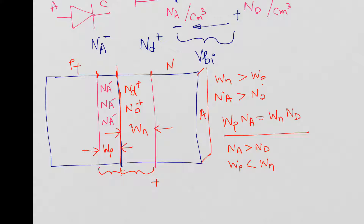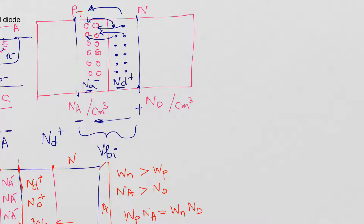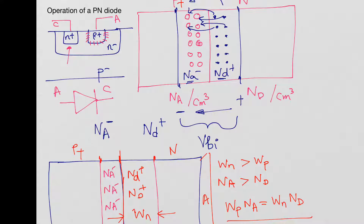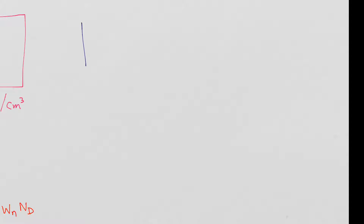So now the built-in potential VBI is a voltage that opposes further movement of electrons from N to P, or holes from P to N. This is the static condition — without any applied voltage, the diode has a built-in potential. Current flows only upon application of an external voltage.